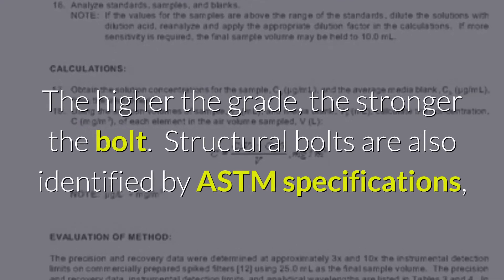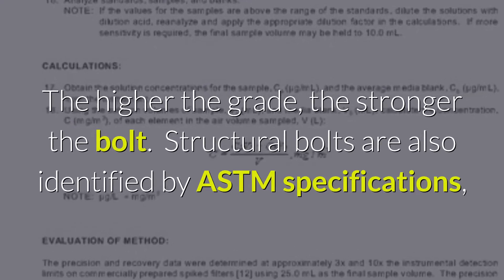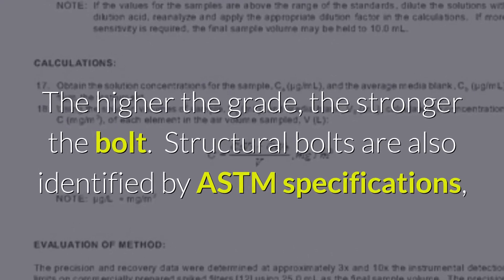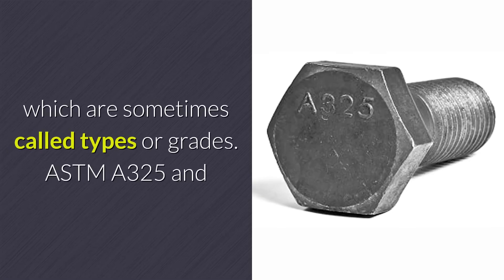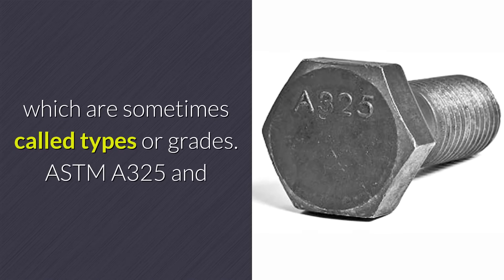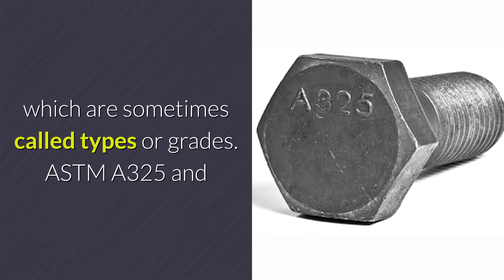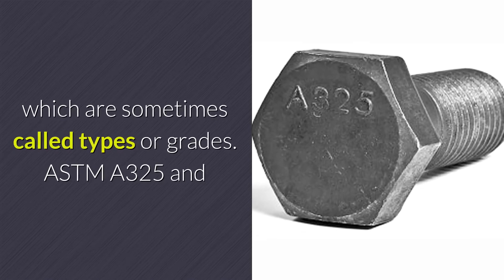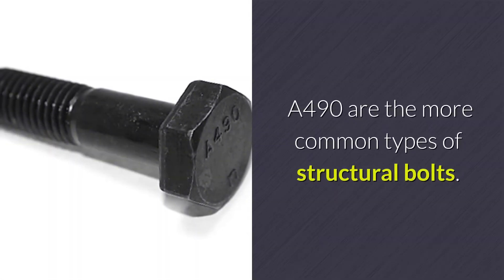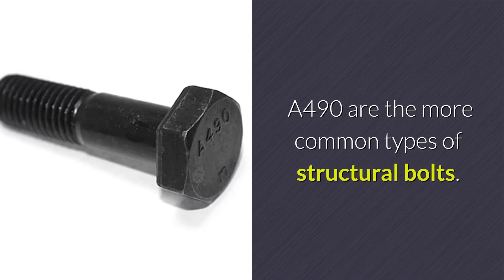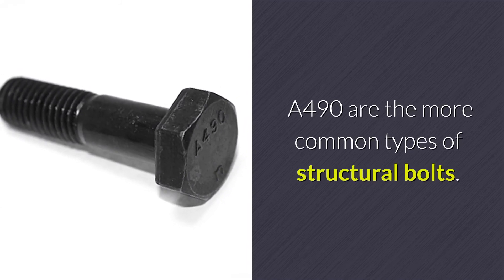Structural bolts are also identified by ASTM specifications, which are sometimes called types or grades. ASTM A325 and A490 are the more common types of structural bolts.